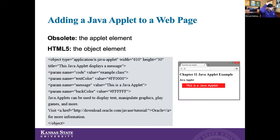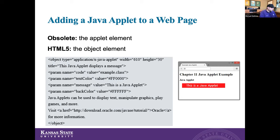To add a Java applet to a webpage, we use the object element in HTML5. We used to use the applet element, but with HTML5 we use the object element. We see our opening object tag with type equals 'application/x-java-applet'. You set a width and height, you can have a title, add your parameter code, and then reference the .class file. Once that class file gets executed, it shows up in the browser.